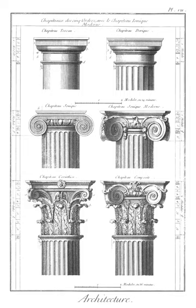Cornice: upper section of an entablature; a projecting shelf along the top of a wall, often supported by brackets or corbels.